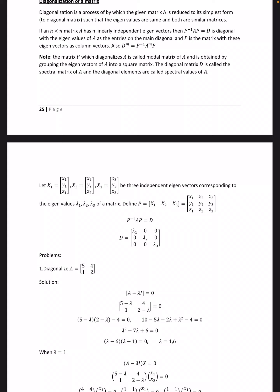Diagonalization of a matrix. Diagonalization is a process by which the given matrix A is reduced to its simplest form, such that the eigenvalues are the same and both are similar matrices. If an n by n matrix A has n linearly independent eigenvectors, then P inverse AP equals D, which is diagonal with the eigenvalues of A as the entries on the main diagonal, and P is the matrix with these eigenvectors as column vectors. Also, D to the power m equals P inverse times A to the power m times P.